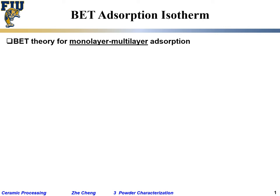The Langmuir isotherm lets us get surface adsorption, and from that we can determine specific surface area. However, people also observe other types of adsorption isotherms which are not strictly monolayer coverage — adsorption can go from monolayer to multilayer and does not plateau at low pressure. Three scientists addressed this with the BET theory for monolayer to multilayer adsorption.